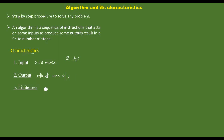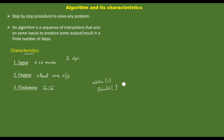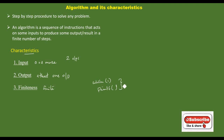Third characteristic: finiteness. The algorithm must be finite — it must terminate after a finite number of steps. In an infinite loop, it will not end. For example, if you consider a while(1) with a printf statement, it will repeat infinitely. But if you consider a different condition, it will be finite.